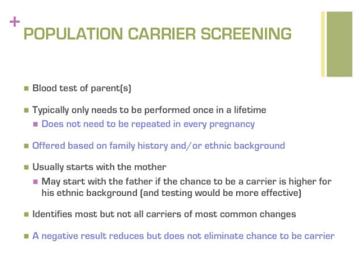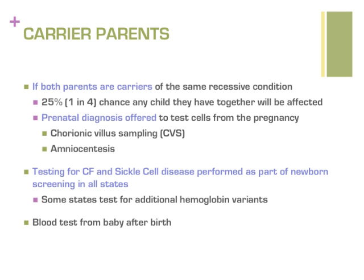If one parent is identified to be a carrier of a common recessive genetic condition, then screening for the same condition is offered to the other parent. When both parents are identified to be carriers of the same recessive condition and have a one-in-four chance that any child they have together will be affected by that condition, they will be offered prenatal diagnostic testing for the condition, such as CVS or amniocentesis.